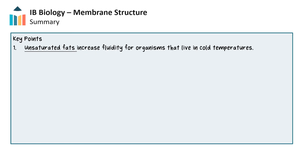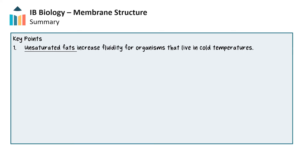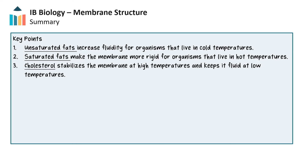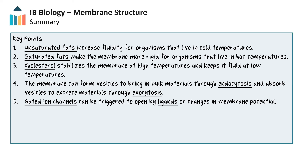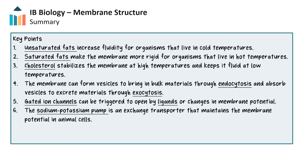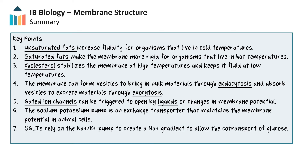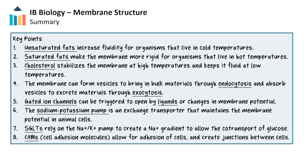In this video, we saw how the fats in the phospholipid bilayer can help regulate fluidity, and that unsaturated fats increase fluidity for organisms that live in cold temperatures, while saturated fats make the membrane more rigid for organisms that live in hot temperatures. We also discussed the function of cholesterol in the membrane, and that it stabilizes the membrane at high temperatures and keeps it fluid at low temperatures. We looked at how the membrane can form vesicles to bring in bulk materials through endocytosis, and release materials through exocytosis. We also looked at gated ion channels triggered by ligands or changes in membrane potential, the sodium-potassium pump as an exchange transporter, sodium-dependent glucose co-transporters (SGLTs) and how they rely on the sodium gradient to co-transport glucose, and finally how cell adhesion molecules create junctions between cells across different cell types and tissues.